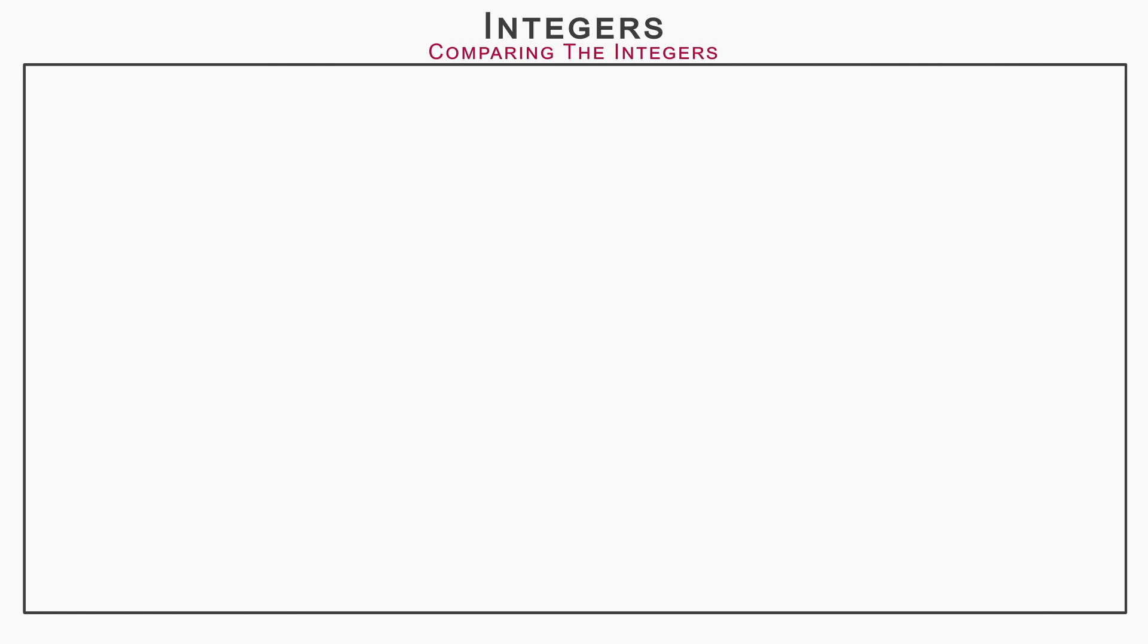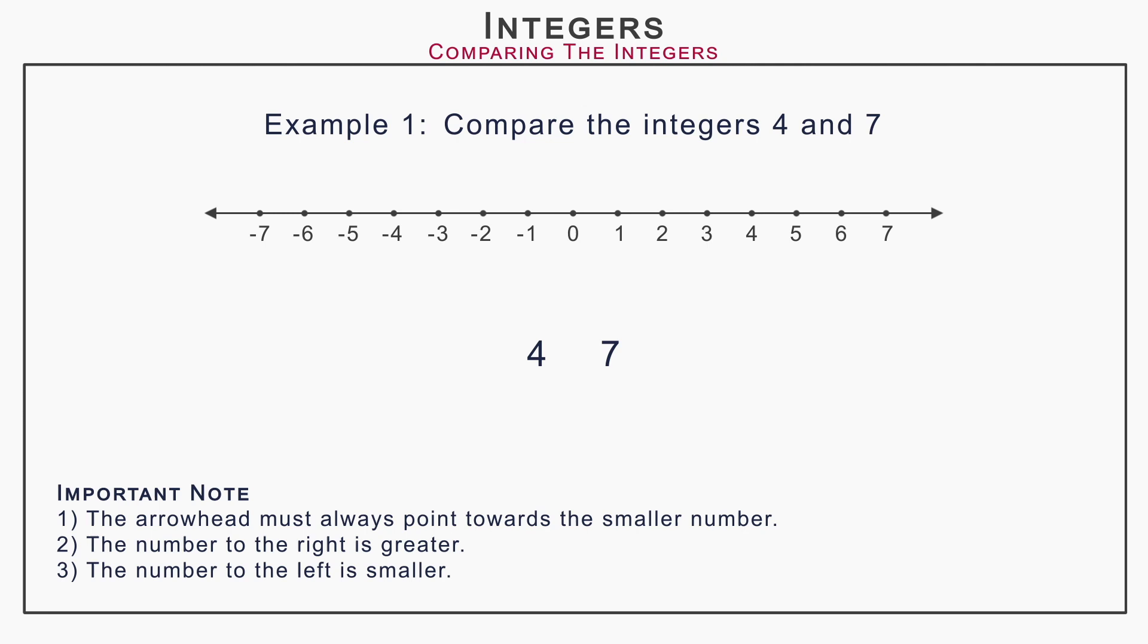Let us take an example. Example 1: Compare the integers 4 and 7. Let us develop a thinking way to compare integers. Take a number line and focus on 4 and 7. The first integer is 4. The second integer, 7, is to the right of the first integer 4. Therefore, 7 is greater and 4 is smaller. Here, the arrowhead must point towards the smaller integer 4. Therefore, the answer is 4 less than 7.